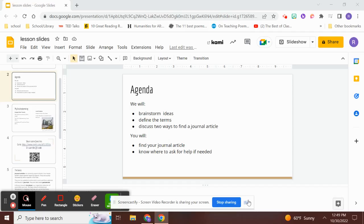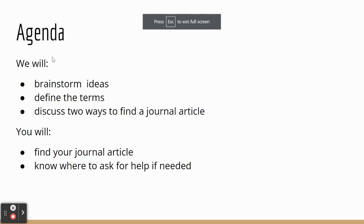In this lesson, we will review what a journal and journal article is and how to use a database to find one. We'll look at two quick approaches to get you an article. Remember that you can pause and review any part of the lesson when you need to. For this lesson, we will brainstorm ideas to find the terms, discuss two ways to find a journal article, and then you will find your journal article and know where to ask for help if needed.